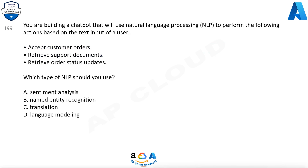Question 199. You are building a chatbot that will use Natural Language Processing (NLP) to perform the following actions based on the text input of a user: Accept customer orders, Retrieve support documents, Retrieve order status updates. Which type of NLP should you use? A. Sentiment analysis, B. Named entity recognition, C. Translation, D. Language modeling.